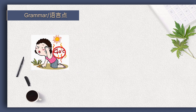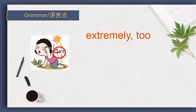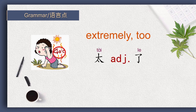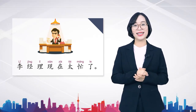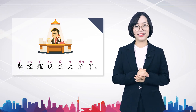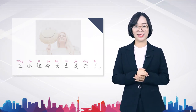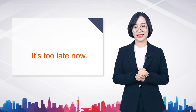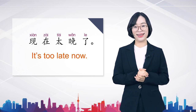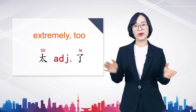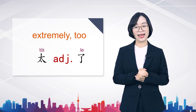What's the weather like right now? Yes, it is extremely hot. In Chinese, we can use the expression 太...了 to indicate the meaning of 'extremely.' So 'extremely hot' in Chinese is 太热了。 李经理现在太忙了。 王小姐今天太高兴了。 'It's too late now' in Chinese is 现在太晚了。 We always put adjectives between 太 and 了。